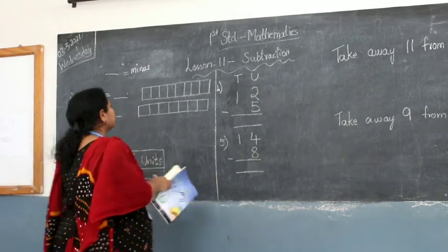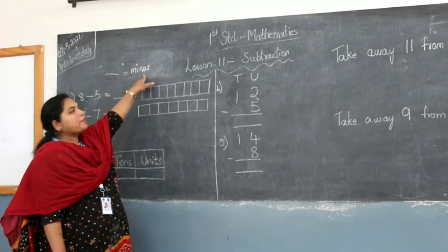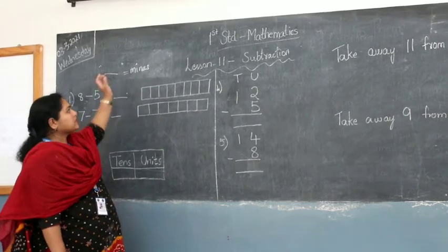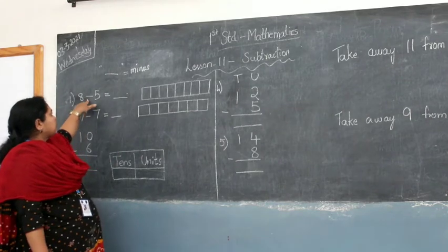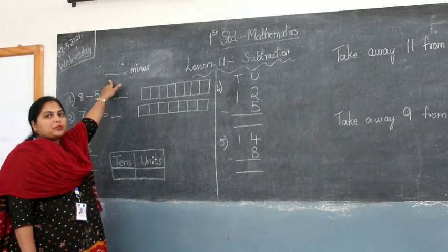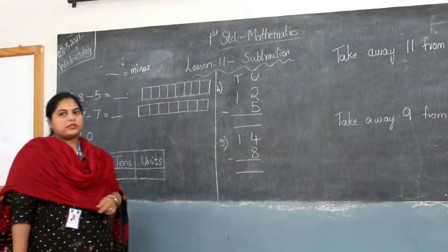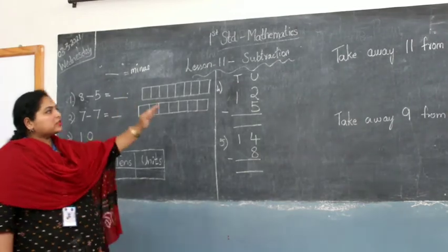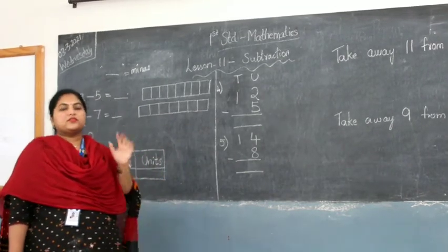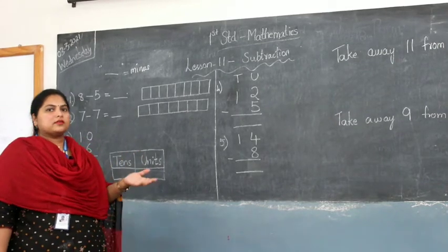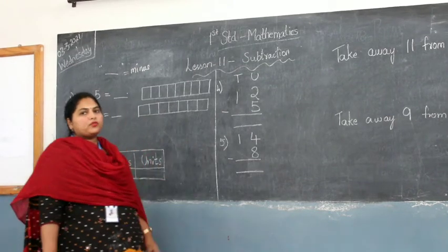The sign for subtraction is a sleeping line or a dash, which is called minus. So this is the sign of subtraction. Between any numbers, if you see this sign, that means it is subtraction. We had done subtraction from 1 to 9. Now, in this chapter, what we are going to learn is: any number subtracted, the difference — that is whatever is left — the answer will be less than 20. So within 20 is what we are going to learn.